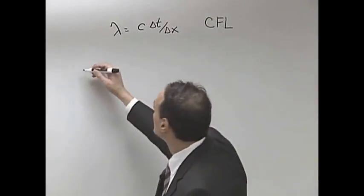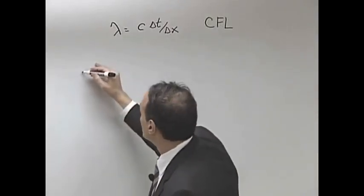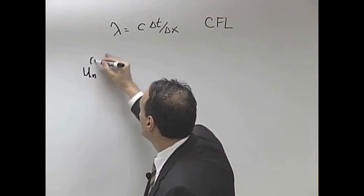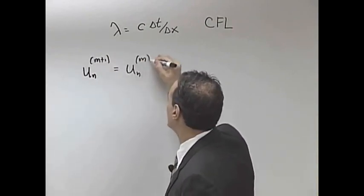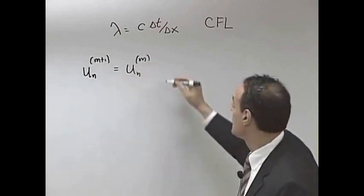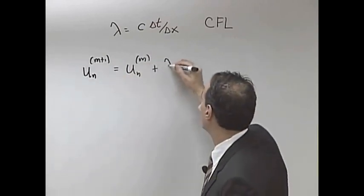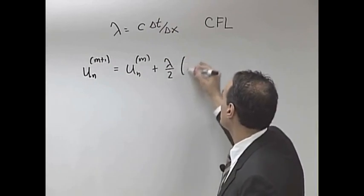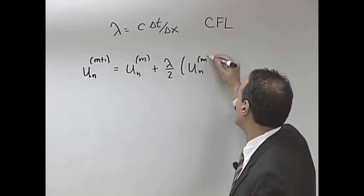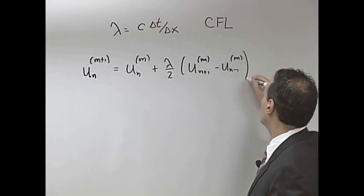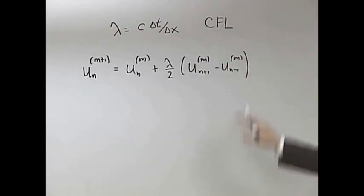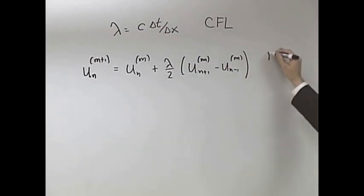Okay, so the first scheme here is basically using a Forward Euler method. When we did this discretization, we get lambda over 2 times u_n+1 minus u_n-1. So this was our scheme, it was called the Forward Euler.